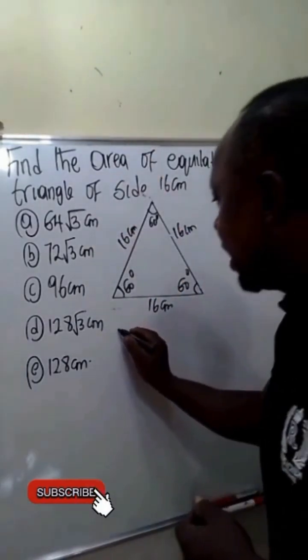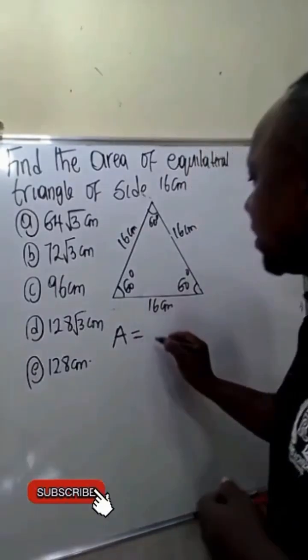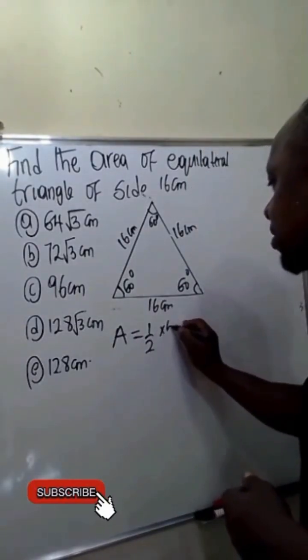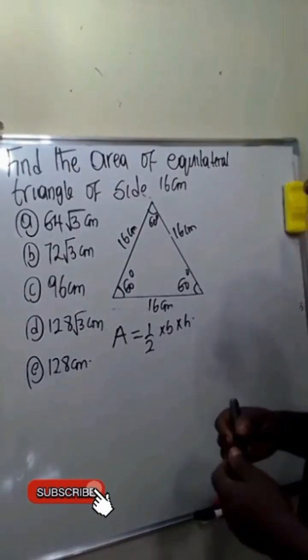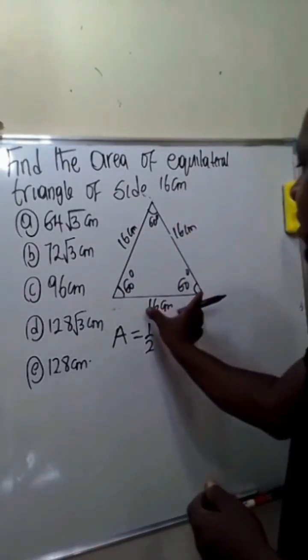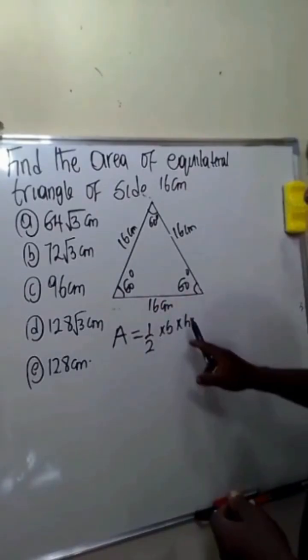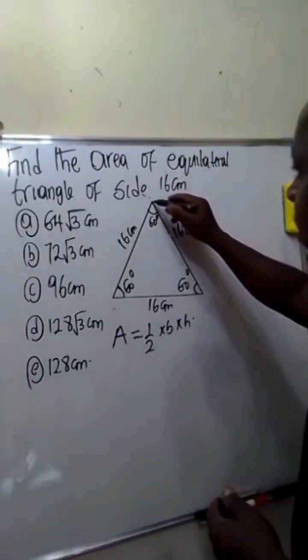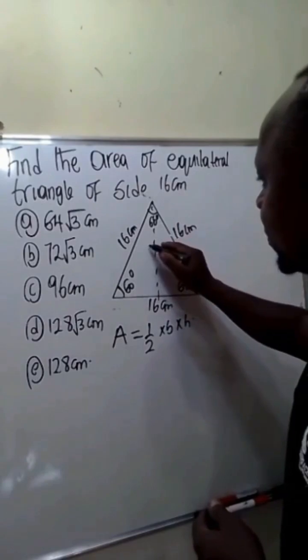Now we are asked to find the area. The area of a triangle is given by the formula 1 over 2 times base times height. The base of this triangle is 16 centimeters, but the height is not given. This is the height.